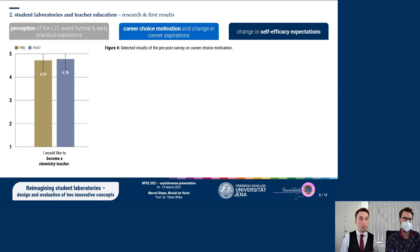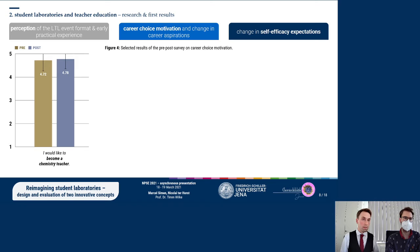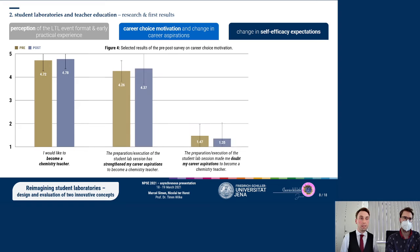Concerning career choice motivation, the piloting results initially indicate that participants chose to study chemistry with a high level of motivation, which remains largely constant even after interaction with the students. It can be seen that the practical experience in the student lab reinforces rather than challenges the student teachers' career aspirations.